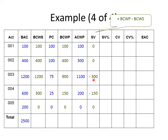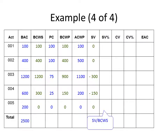For activity three, the schedule variance is reported as minus $300,000 — a negative figure meaning we are running behind schedule. Activity four is also behind schedule. Most software tools like Microsoft Project report this as a percentage, using the formula: schedule variance divided by budgeted cost of work schedule. Activity three is 25% behind schedule and activity four is 50% behind schedule, so as a project manager you must note these activities are performing poorly in terms of time.